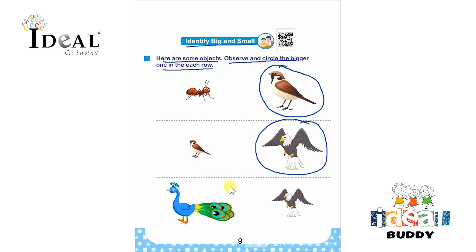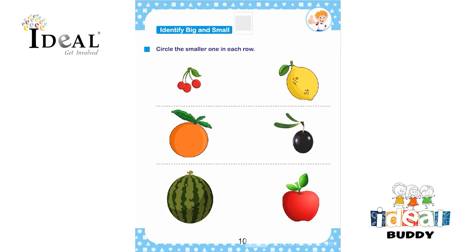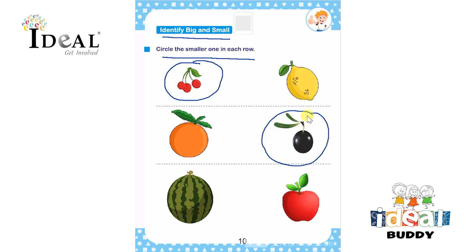Here they have to circle the smaller one in each row. There are two fruits given, so the child has to circle the smaller one. In the next row this is the smaller one, and in the last row the apple is the smaller one.